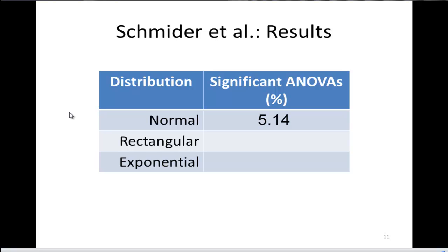Now in the rectangular distribution, which had a decent amount of kurtosis but not skew, the number of significant ANOVAs was equal to 5.26. And now for the important exponential distribution, which had really bad skew and pretty bad kurtosis, the percentage of ANOVAs that were significant was equal to 4.72.